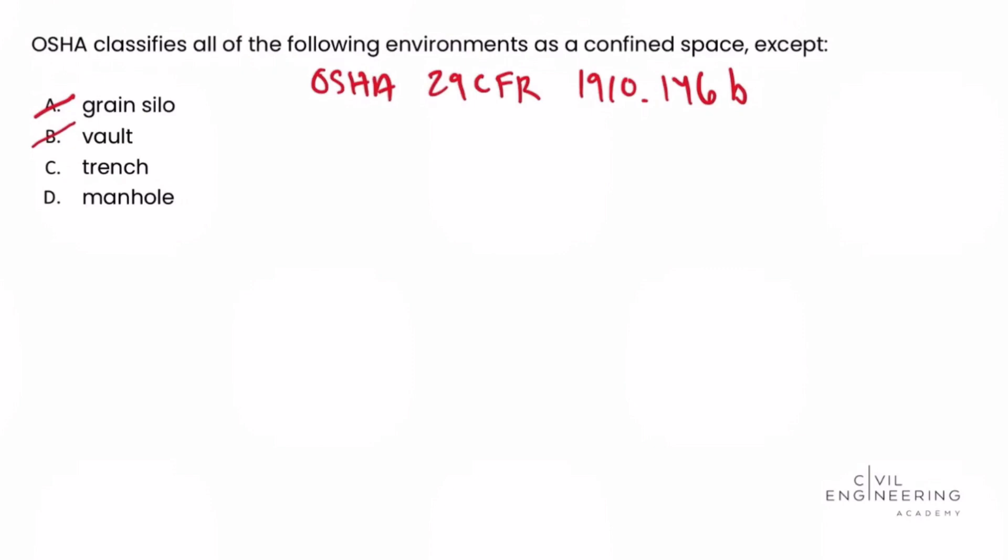We also did not hear a manhole explicitly called out in the regulation. But if we look at the other parts of the definition - large enough so that an employee can enter and exit to perform assigned work and not designed for continuous employee occupancy - and if we think about how a manhole compares to the other examples given, the storage bins, the tanks, the silos, the vaults, the pits, we can see that the manhole falls along those same lines. So we can eliminate that.